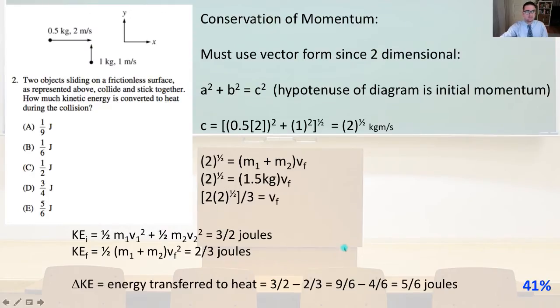Number two, two objects sliding on a frictionless surface as represented above collide and stick together. How much kinetic energy is converted to heat during the collision? So we're going to use the conservation of momentum and we have to use the vector form since it's two-dimensional. So we know that A squared plus B squared equals C squared from the Pythagorean theorem. And in this case, the hypotenuse of the diagram is going to be the initial momentum.